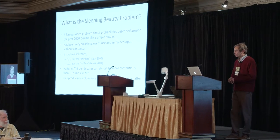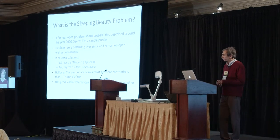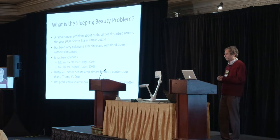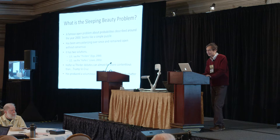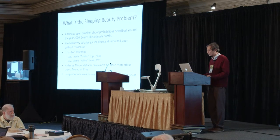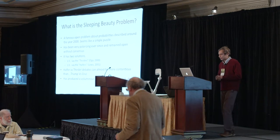So what is the Sleeping Beauty problem? It's a famous open problem about probabilities described around the year 2000, and it seems like a simple puzzle, but it has been very polarizing ever since, and it has remained open without consensus. It has two solutions: one third, say the thirders, and half, say the halfers. The debates can be pretty contentious — it's almost like Trump versus Cruz. It has produced a voluminous literature and lots of web chatter.